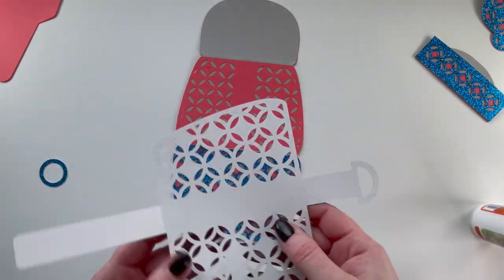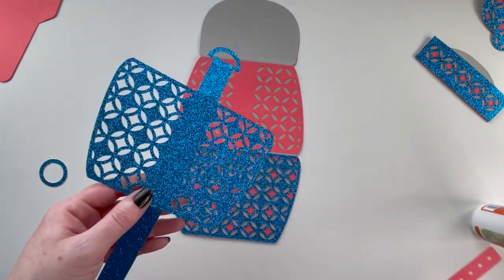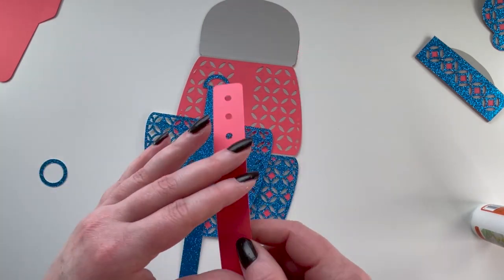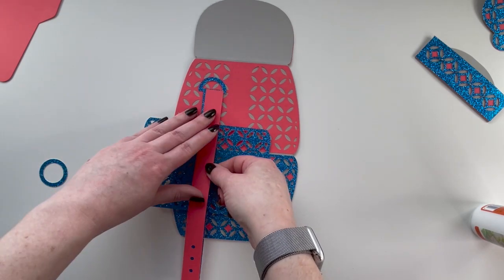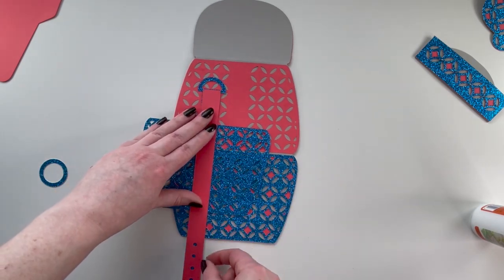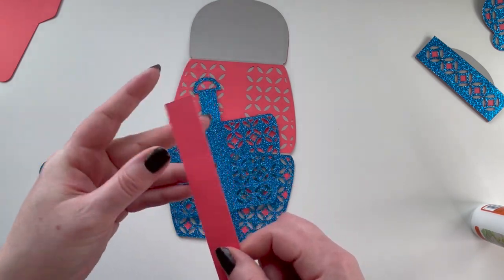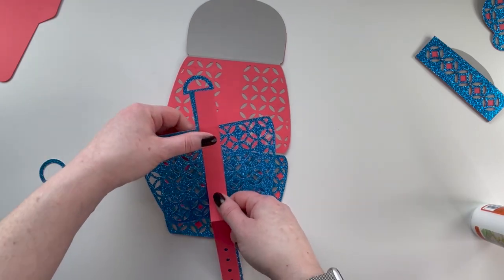Now we're going to attach this piece. Now it does have scored lines in it, one there, one there. But before you attach it, you want to attach this piece, so it goes right on top. We'll get your folds done on that one too. Glue it on.